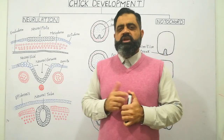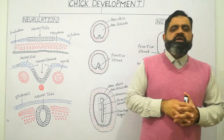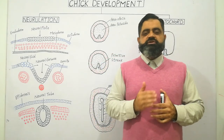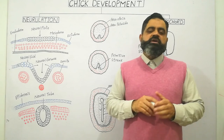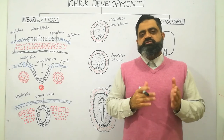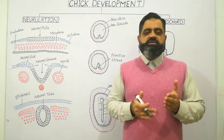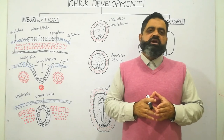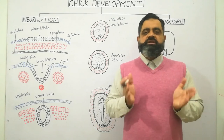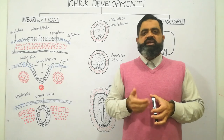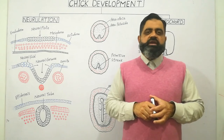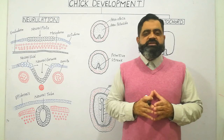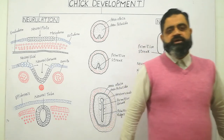After the formation of mesoderm and the nervous system, the process of organogenesis and the formation of other organs takes place. After 21 days, a complete chick develops which hatches from the egg and starts a new life. I hope this makes sense — see you in the next lecture, until then bye.